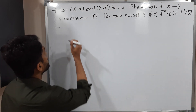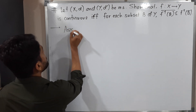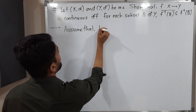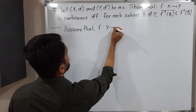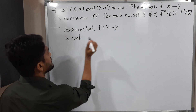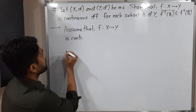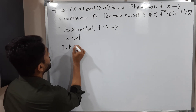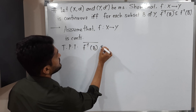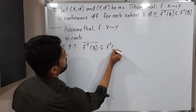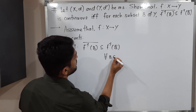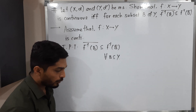Let us first assume one part. We assume that f from X to Y is a continuous function — that is, f is continuous on X. What we have to prove is that f⁻¹(B̄) ⊆ f⁻¹(B)̄, and this must hold for all subsets B of Y.